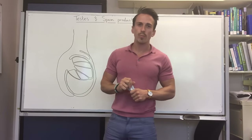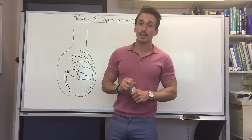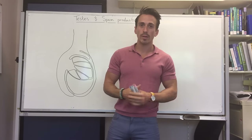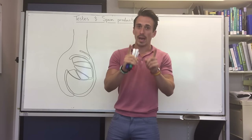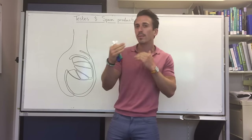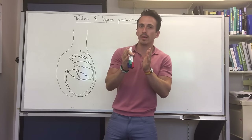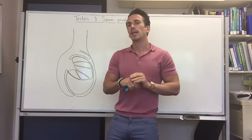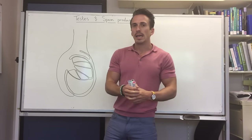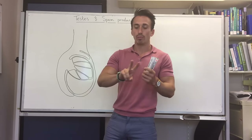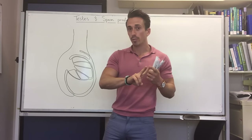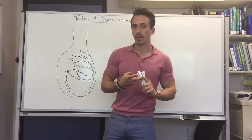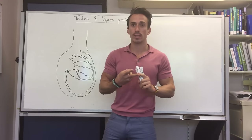In this video we're going to talk briefly about the testes and sperm production. There are two testes, around four centimeters in length, two and a half centimeters in width, and weighing around 10 to 12 grams each. The purpose of the testes is twofold: sperm production and androgen production. Androgens are male sex hormones.